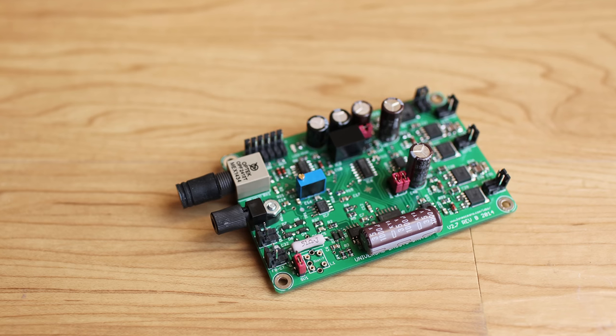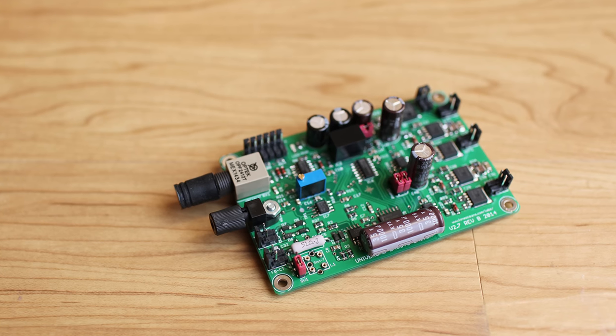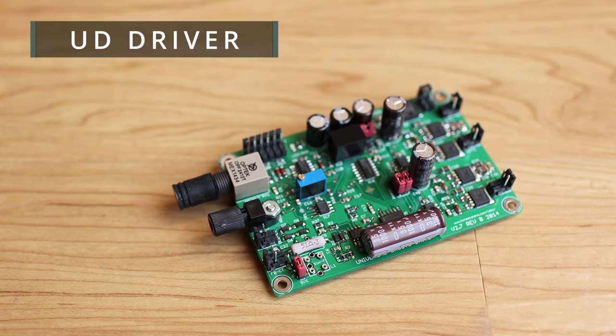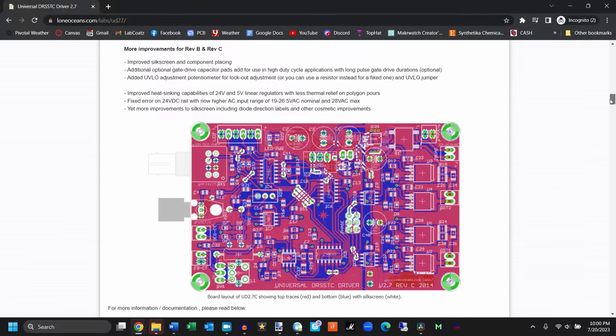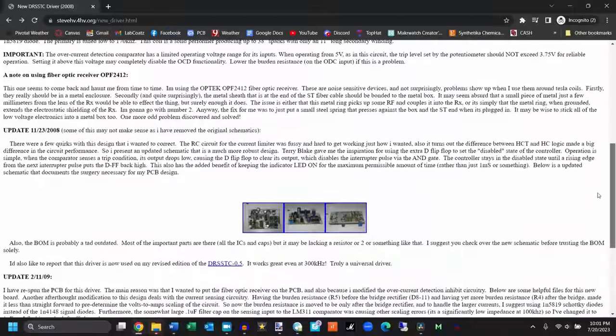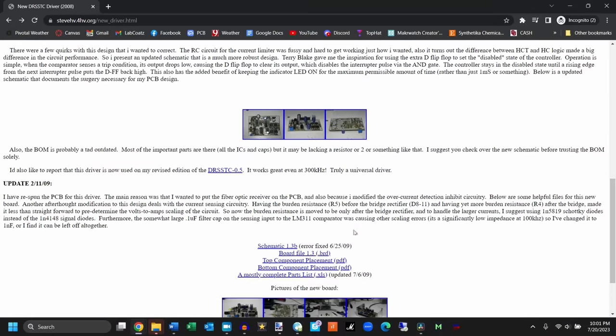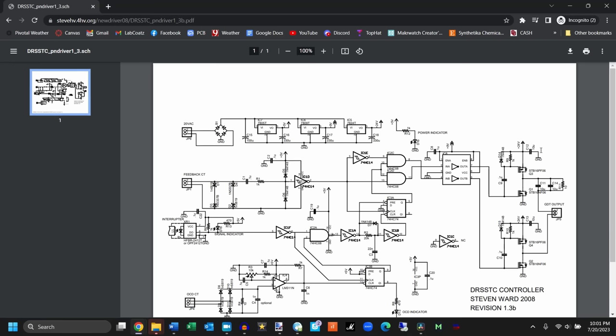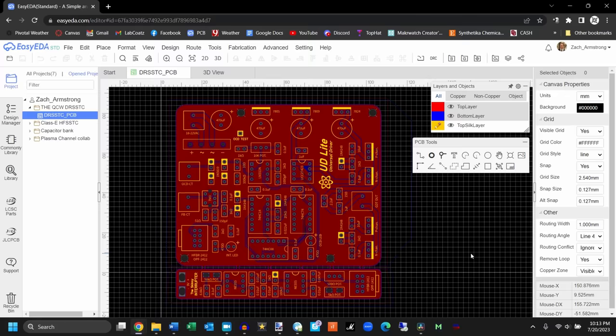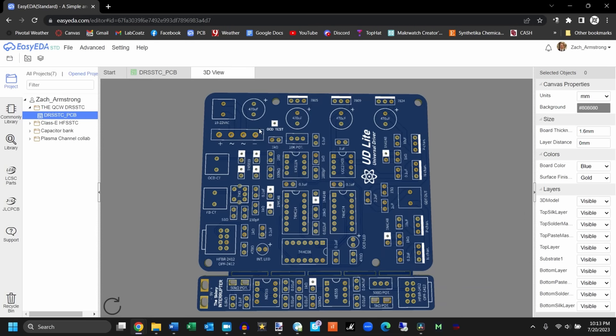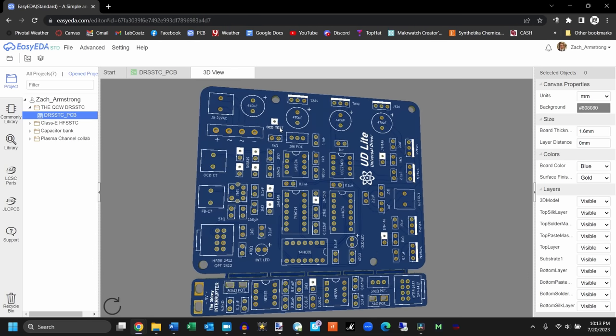Alright, the driver used in most coils is fairly universal at this point, and is usually referred to as the UD driver. Lone Ocean's model, the UD 2.7C, is probably the newest, most popular, and best documented version, although Steve Ward's original UD 1.3B is still perfectly suitable for driving DRSSTCs. I've posted links to both in the video description. For my coil, I'll be using my own variation of the UD driver, which I've dubbed the UD Lite. Essentially, it's an all through-hole version of the UD 1.3B, with an added phase shifter, and a few other updates borrowed from the UD 2.7C.